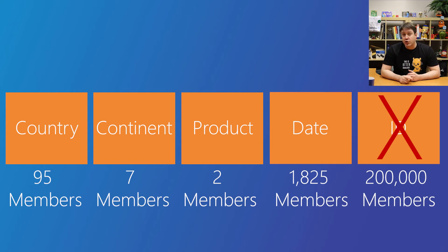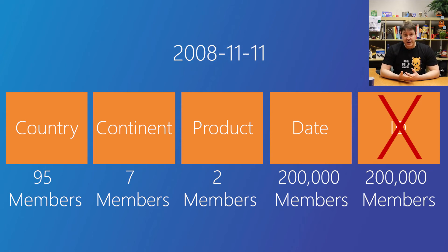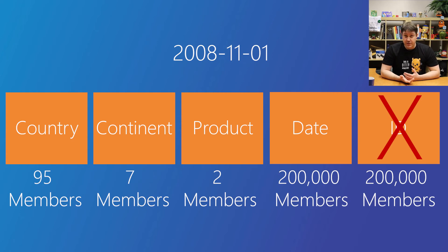There is also one cool trick you can do to help with dates and resource requirements: trim the data. If you have 200,000 data points each being stored at the second level, you could potentially have another 200,000 unique members, which would have a significant impact. But if you're only reporting at the day or month level, you can significantly reduce the RAM impact by trimming this data so it doesn't include seconds — taking the example from north of 200,000 members down to maybe only 60, which is really a big deal.